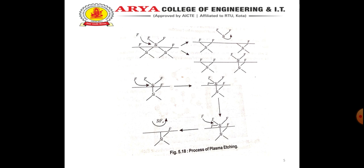CF4 does not directly etch silicon since the required net energy is positive. In plasma, due to collision of high energy electrons, some CF4 molecules dissociate and free fluorine atoms and molecular radicals are produced.